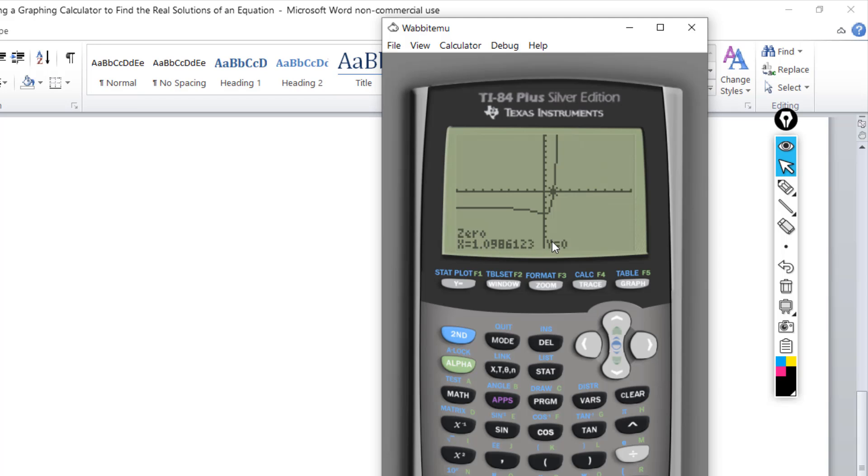And there it is. We have a zero at x equals 1.0986. Run that out to three places. The real solution for this equation has one only. It's 1.099. Clear this.